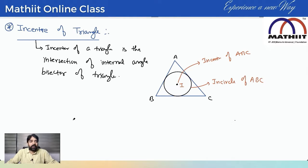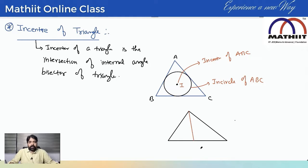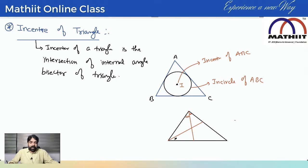Remember internal angle and external angle bisectors? So if anybody asks how to find the in-center, draw a line from each vertex bisecting that angle. Suppose one angle is 60 degrees — the bisector divides it into 30 degrees and 30 degrees. This angle equals this angle. Similarly, draw another angle bisector from another vertex, making equal angles on both sides.